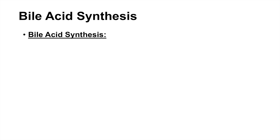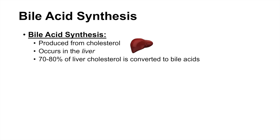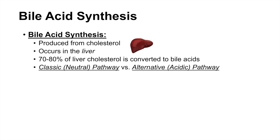In this lesson we're going to talk about bile acid synthesis. Bile acids are produced from cholesterol, and this process of synthesizing bile acids occurs in the liver. About 70 to 80 percent of liver cholesterol is converted to bile acids. There are two pathways we're going to talk about: the classic or neutral pathway, and the alternative or acidic pathway of bile acid synthesis.